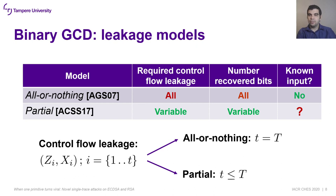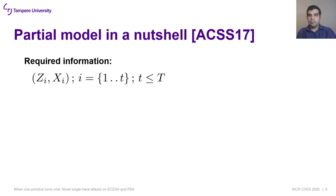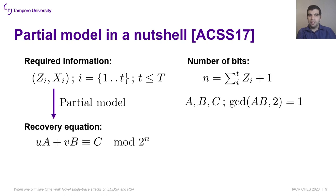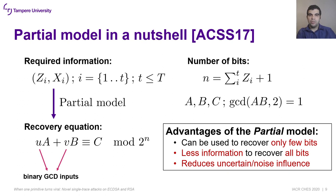The applicability of the partial model when both inputs are unknown had not been done before — it was addressed in this research. Using leakage about the execution flow, it is possible to apply the partial model, obtaining a recovery equation that relates some least significant bits of both inputs U and B. When one input is known, computing the other is trivial. Among the advantages of the partial model: it requires less information than the all-or-nothing model, reducing the influence of uncertainty and noise.